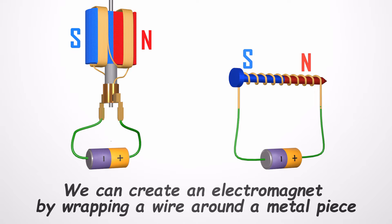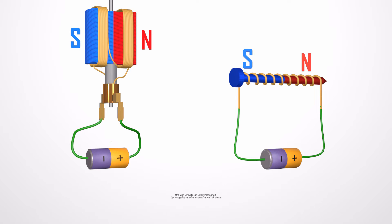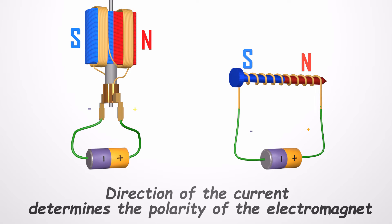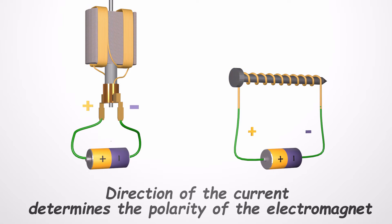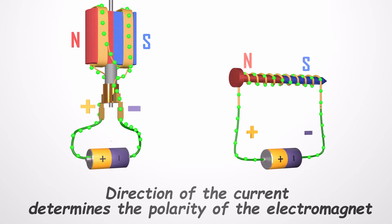The polarity of an electromagnet can be changed by changing the direction of electric current through it. Likewise, the magnetic polarity of the armature can be changed by swapping the current direction.